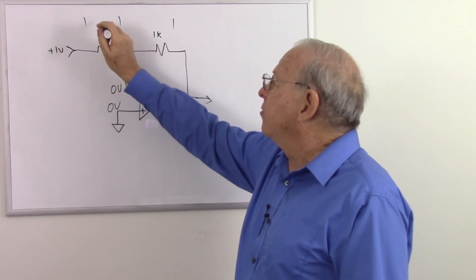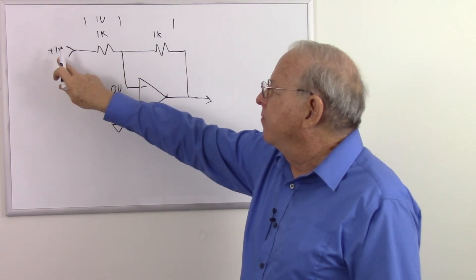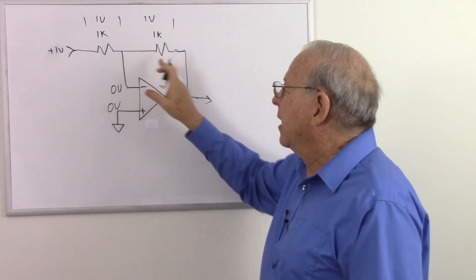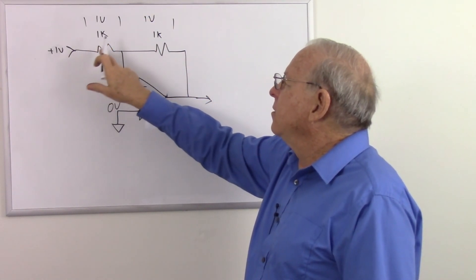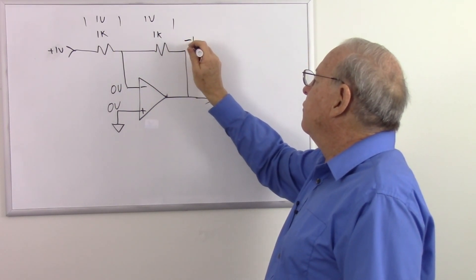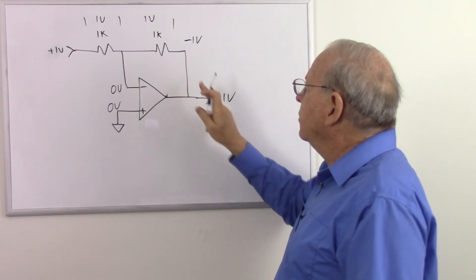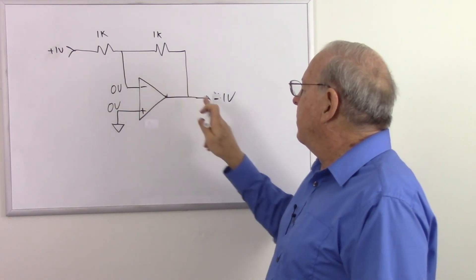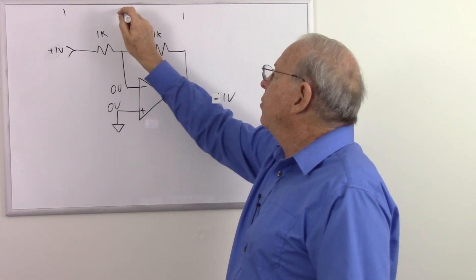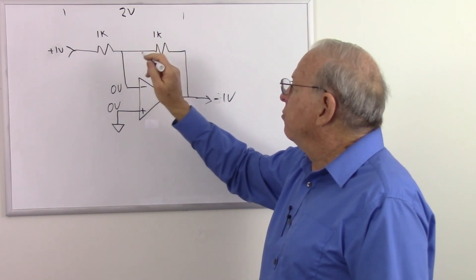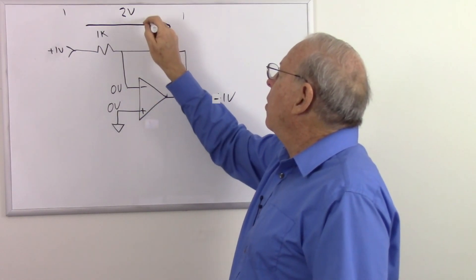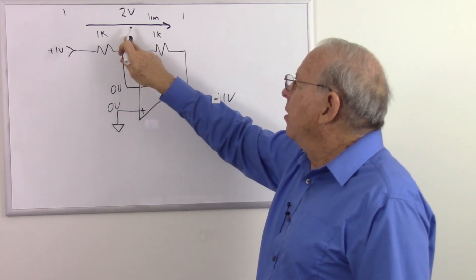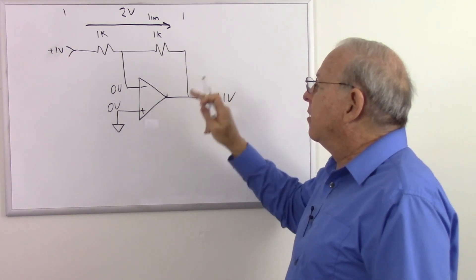We have plus one volt at the input and zero volts at the summing junction — a difference of one volt. It went from plus to zero, so we lose one volt across the first resistor and must continue losing voltage, so we lose another volt — this will have to be minus one volt. The output settles at minus one volt. Let's verify: plus one minus one equals two volts across 2k gives one milliamp. One milliamp through 1k is one volt drop, and through the other 1k is another volt drop. Everything balances out.